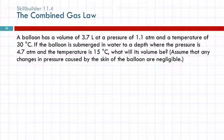Let's do another one. A balloon has a volume of 3.7 liters at a pressure of 1.1 atmospheres and a temperature of 30 degrees Celsius. If the balloon is submerged in water to a depth where the pressure is 4.7 atmospheres and the temperature is 15 degrees Celsius, what will its volume be? Assume that any changes in pressure caused by the skin of the balloon are negligible. That's like the fine print. Balloons are a little bit tricky, but we're going to ignore the trickiness of them.